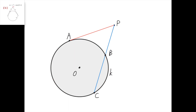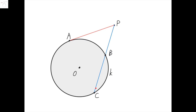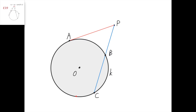Suppose we have a circle K with center point O and a point P outside of the circle. Then we can define the power of the point P with respect to the circle K either as PA squared, where A is such a point that PA is tangent to circle K, or as PB times PC. We know that PA squared equals PB times PC, and it equals PB' times PC' for any other line that intersects the circle at points B' and C' and passes through P.